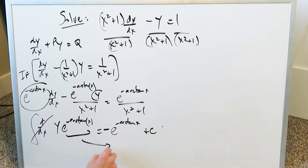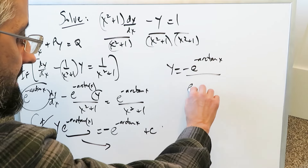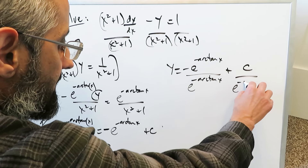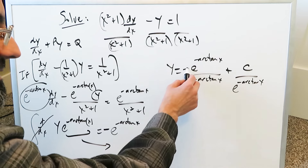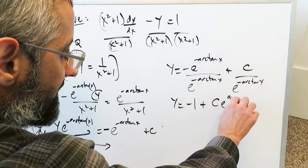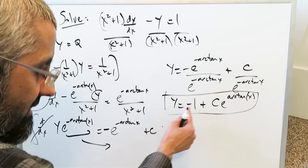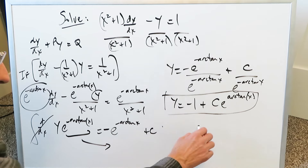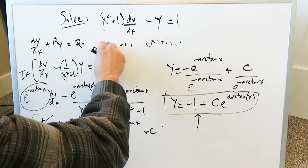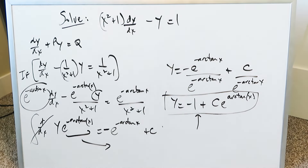Now divide everything by e to the minus arctan x. The minus e to the minus arctan x divided by e to the minus arctan x gives minus 1. The c divided by e to the minus arctan x becomes c e to the positive arctan x. So y is equal to minus 1 plus c e to the arctan x, and that represents the final answer for which this differential equation is true.